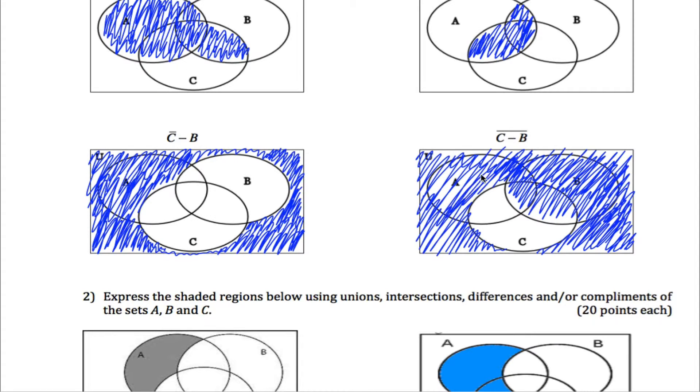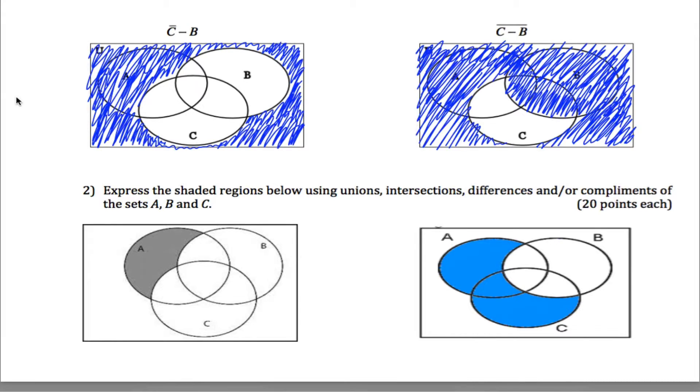A way you can check your answers on these ones where you're taking the complement of something is think about the region that's just in white. Is this region in white represented as C minus B? Sure. It's all of C except get rid of the stuff that's in B. So the region in white is C minus B. So the region that's not in white is the complement of that.